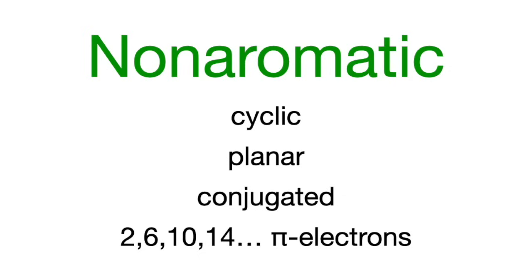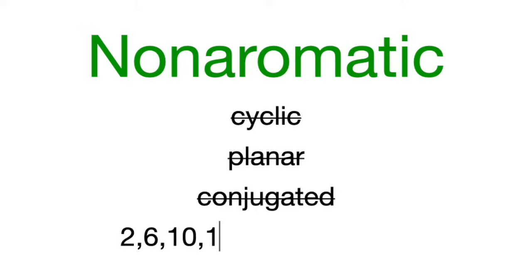So what are non-aromatic compounds? Non-aromatic compounds are not cyclic, or they're not planar, or they're not conjugated — or none of the above. So it doesn't even matter how many pi electrons they have. They're non-aromatic — just any other compound.